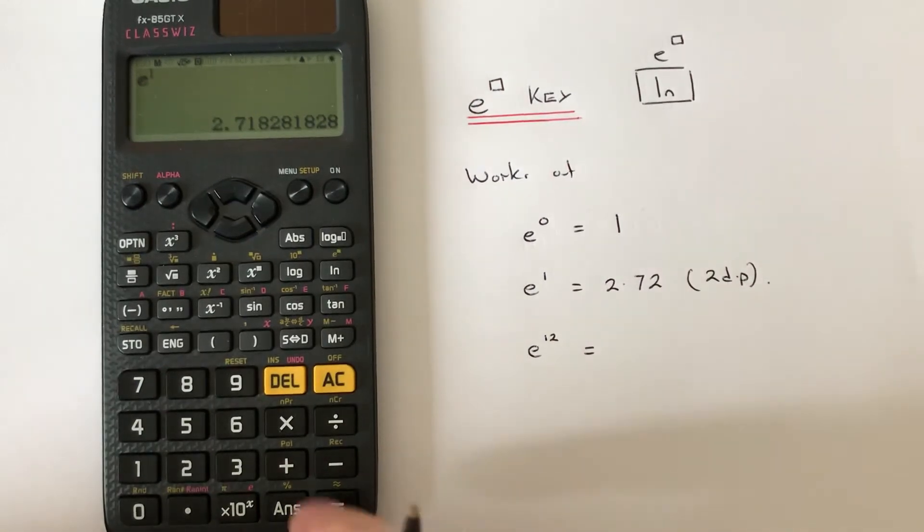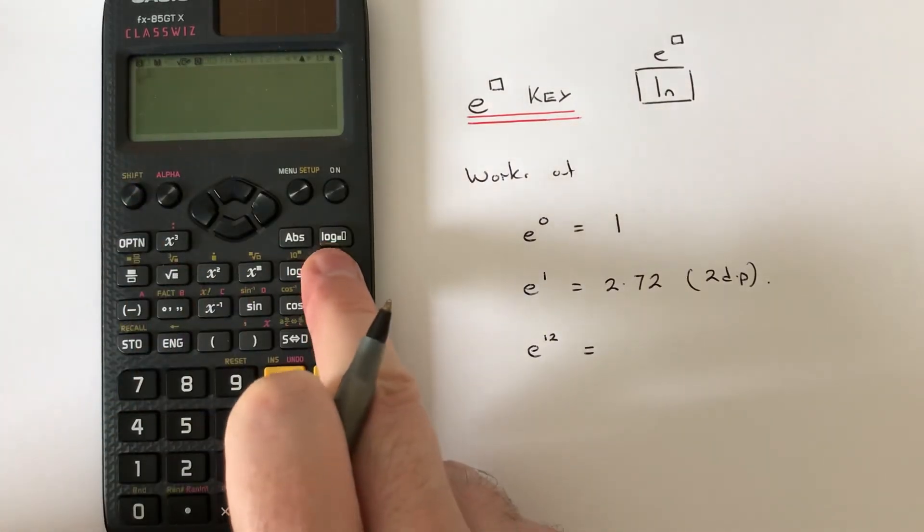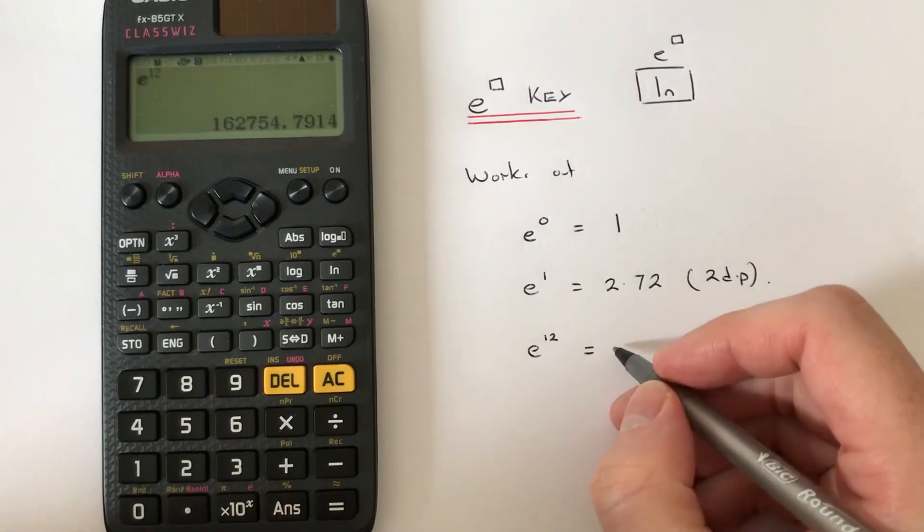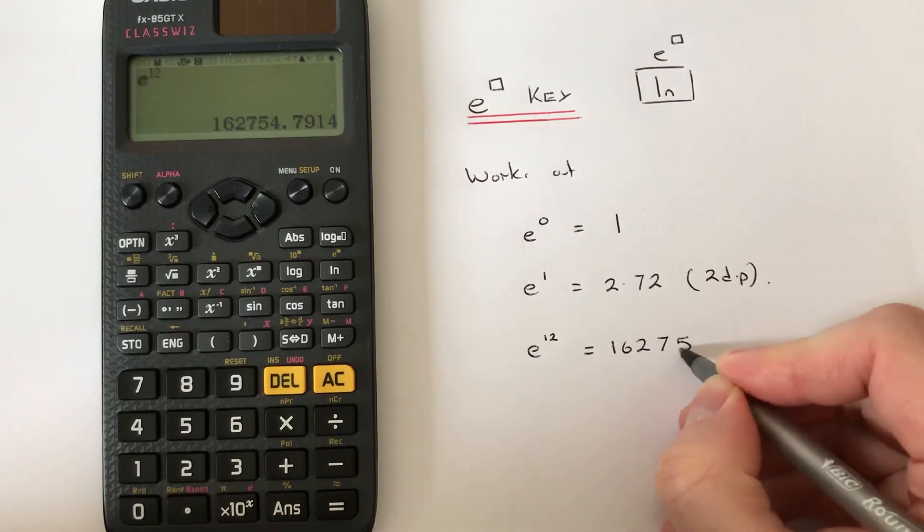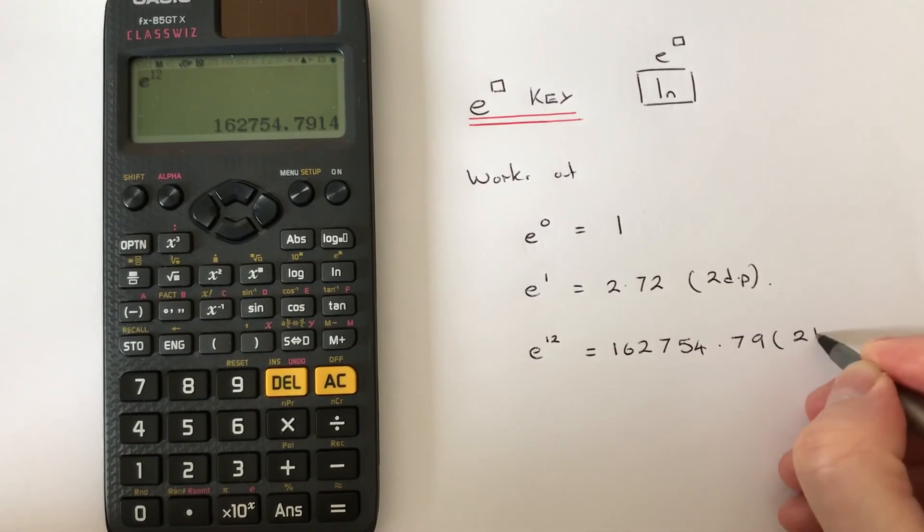Let's do our final example. We've got e to the power of 12. So again, we press shift ln, then type in 12. We get 162,754.79 to two decimal places.